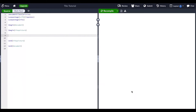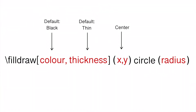The format for a solid point is backslash filldraw, and within brackets you will specify the color and/or thickness. Following that, in parentheses you will include the location of the center of your point, the word circle, and then in parentheses you will specify the units for the radius.